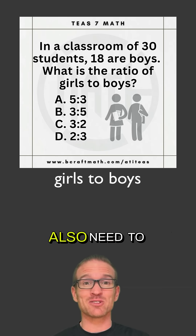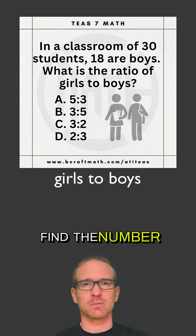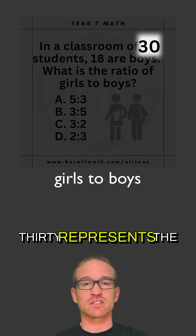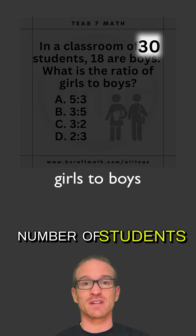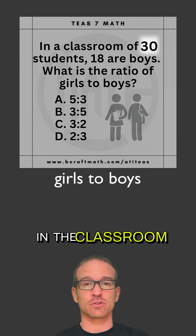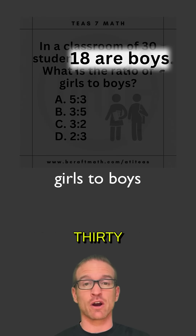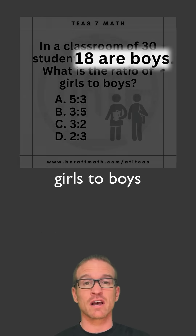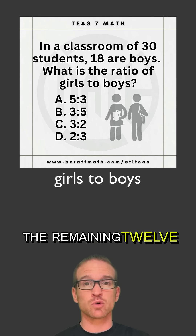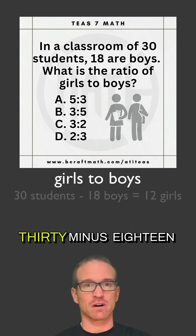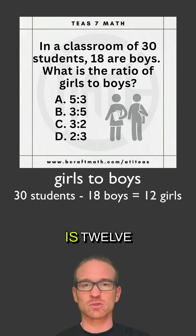Notice we also need to find the number of girls. 30 represents the number of students in the classroom. 18 of those 30 are boys. The remaining 12 are girls — 30 minus 18 is 12.